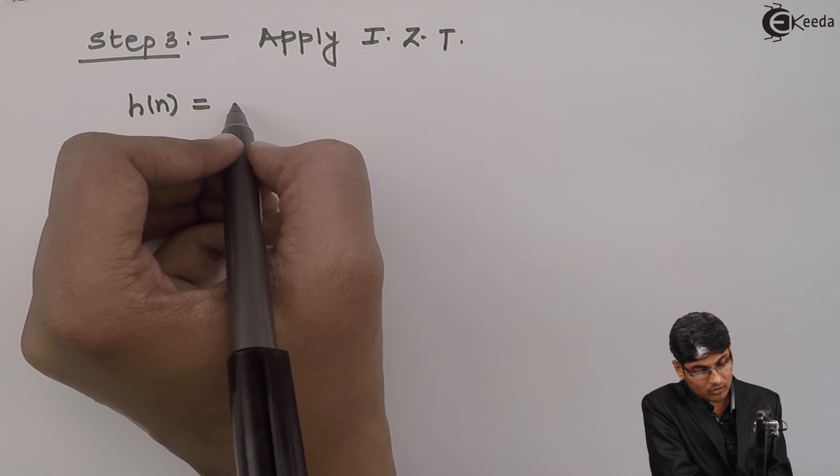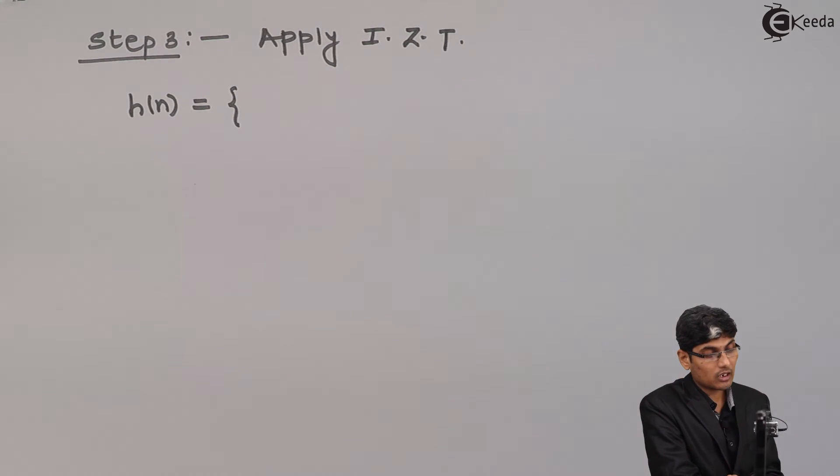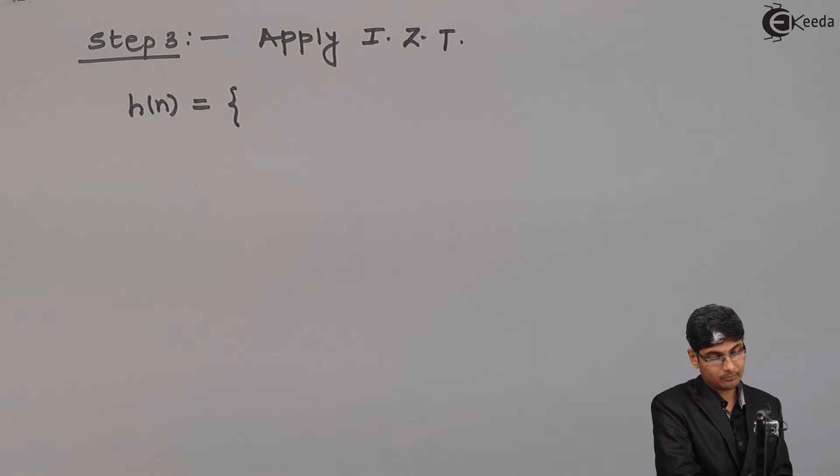Wherever you have 1, there you have delta n. Now, here the impulse response will be a set. Either you can write directly a set or you can write in terms of impulses. So, I will write directly as a set and then we will go for impulses.